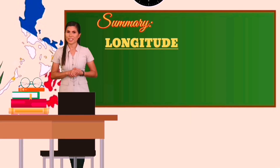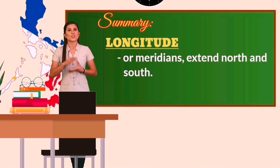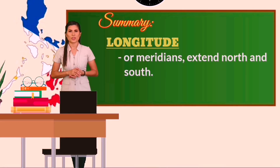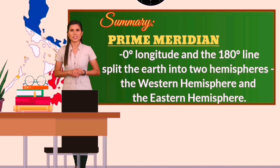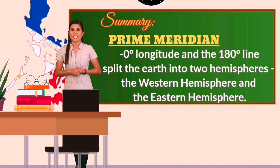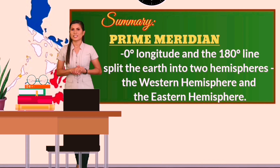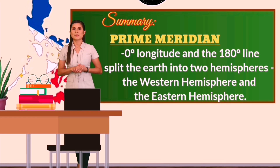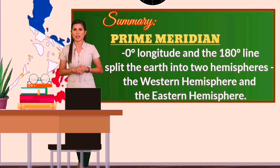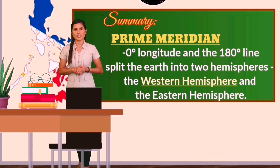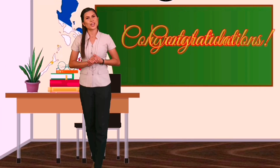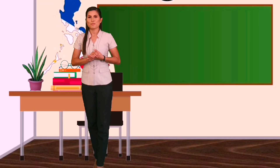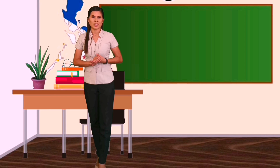Longitude, or meridians, extend north and south. The prime meridian is 0 degree longitude, and together with the 180 degree line, splits the Earth into 2 hemispheres: the western hemisphere and the eastern hemisphere. Thanks for watching and congratulations! You have completed this episode.